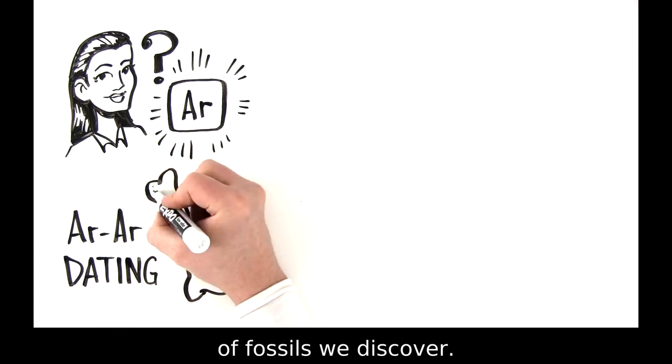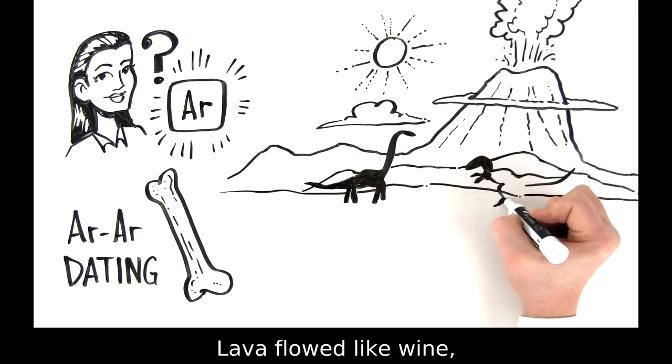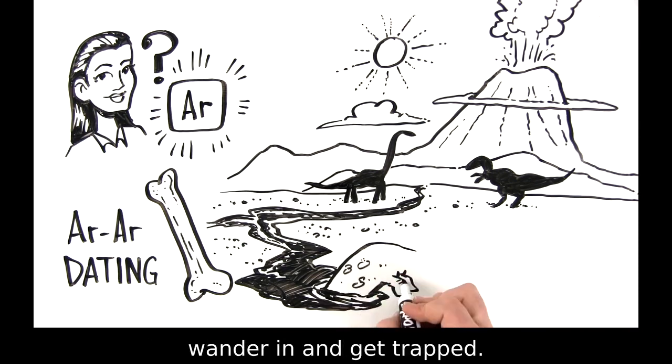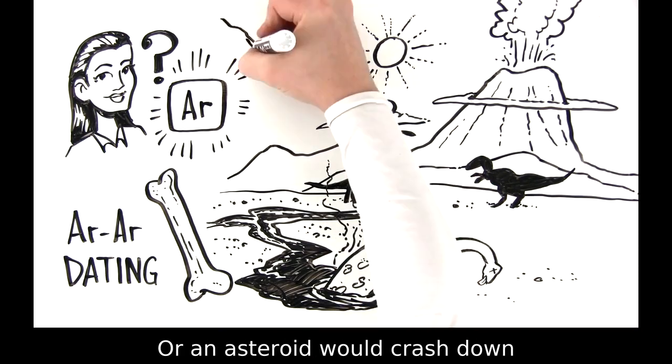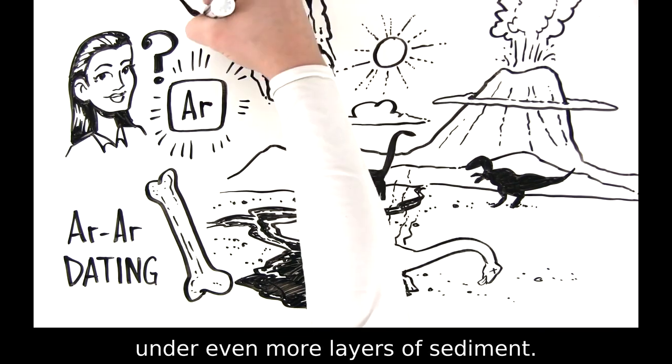Back when dinosaurs roamed the planet, volcanoes were more active. Lava flowed like wine, and sediment blanketed the earth. Sometimes clumsy dinosaurs would wander in and get trapped. Or an asteroid would crash down from outer space, preserving the dinosaurs under even more layers of sediment.